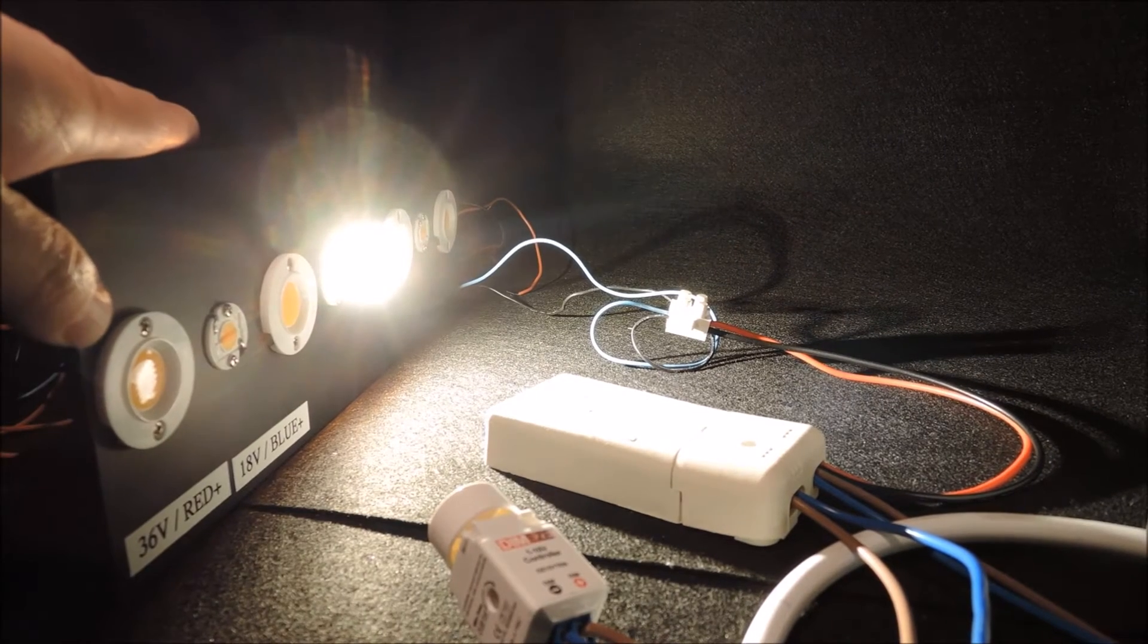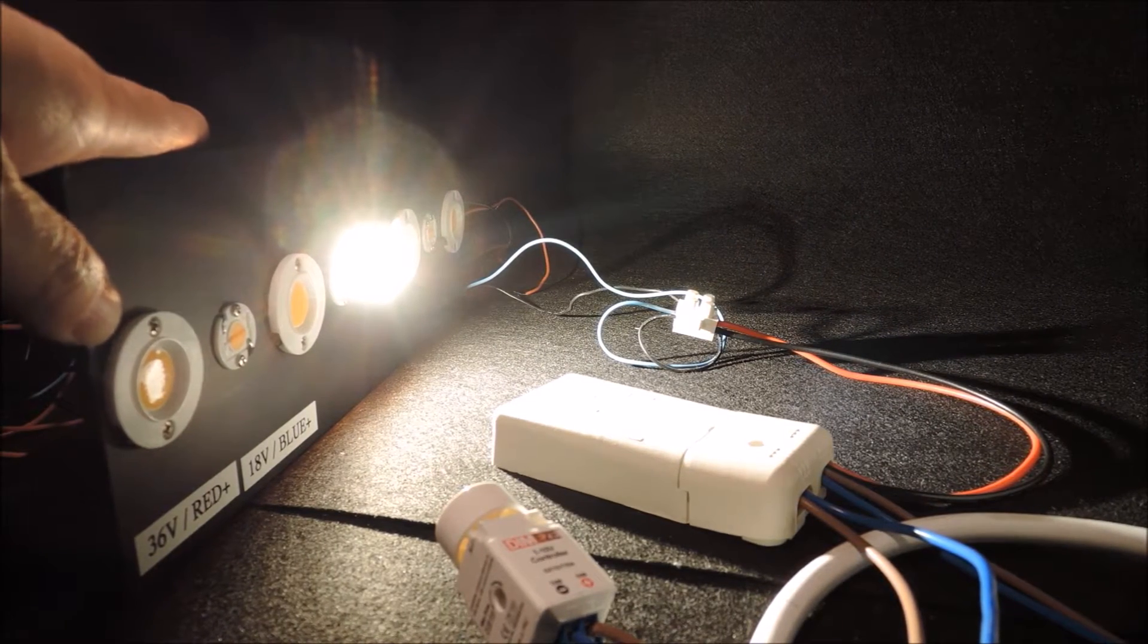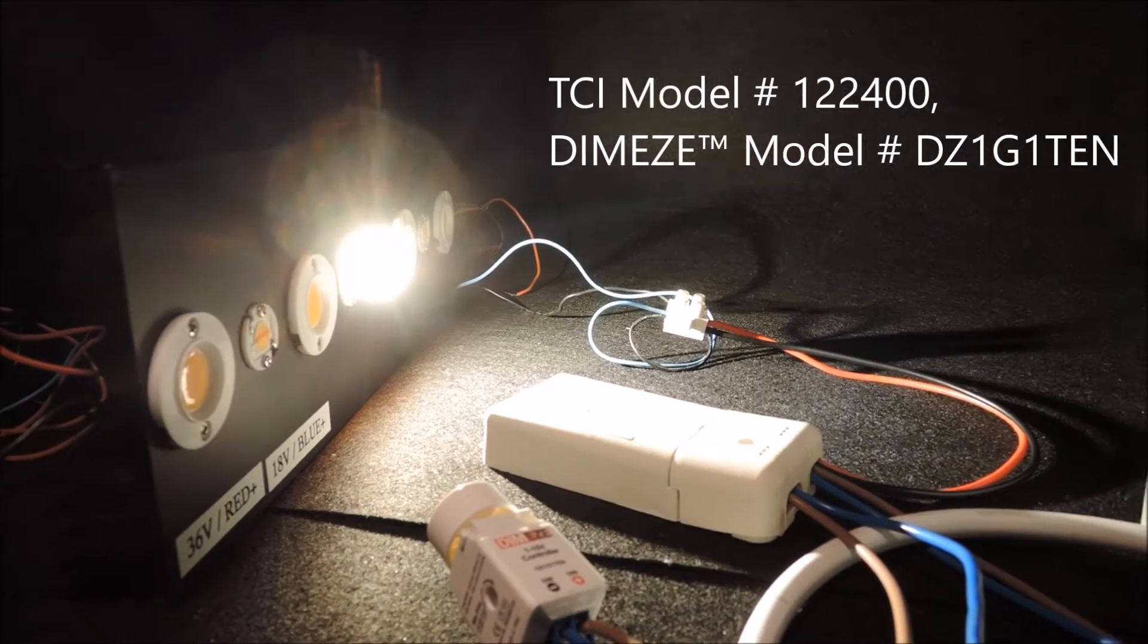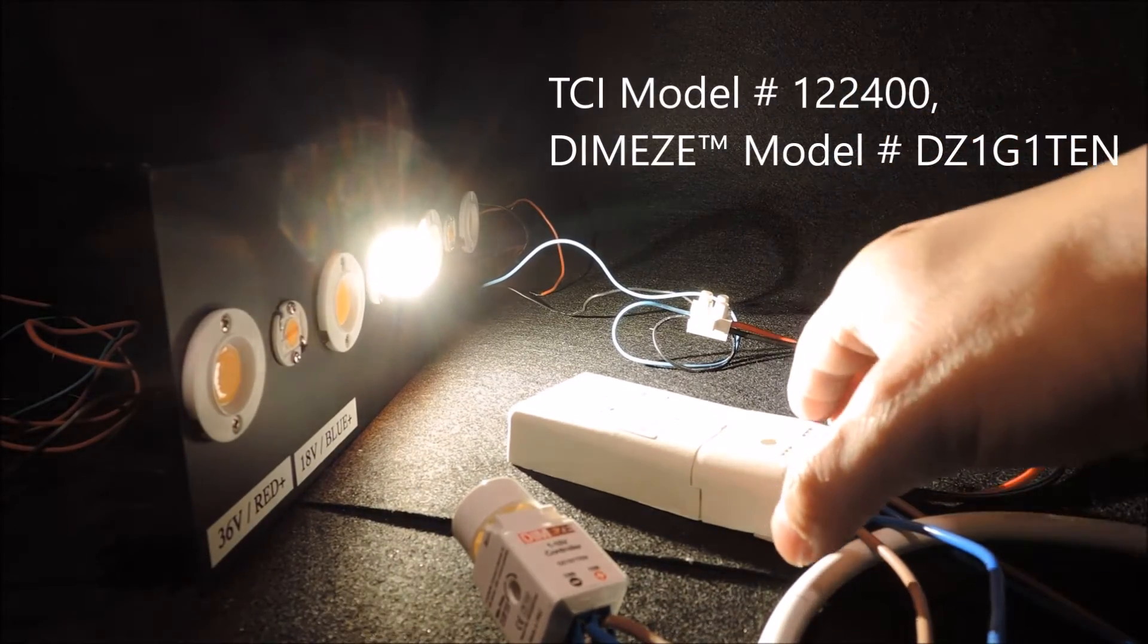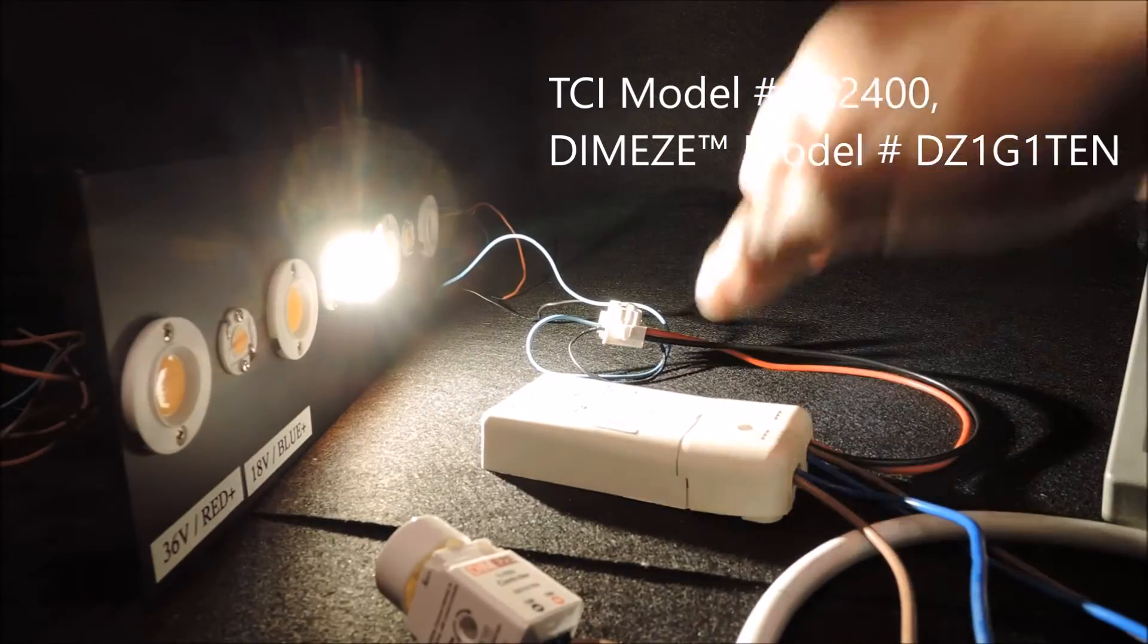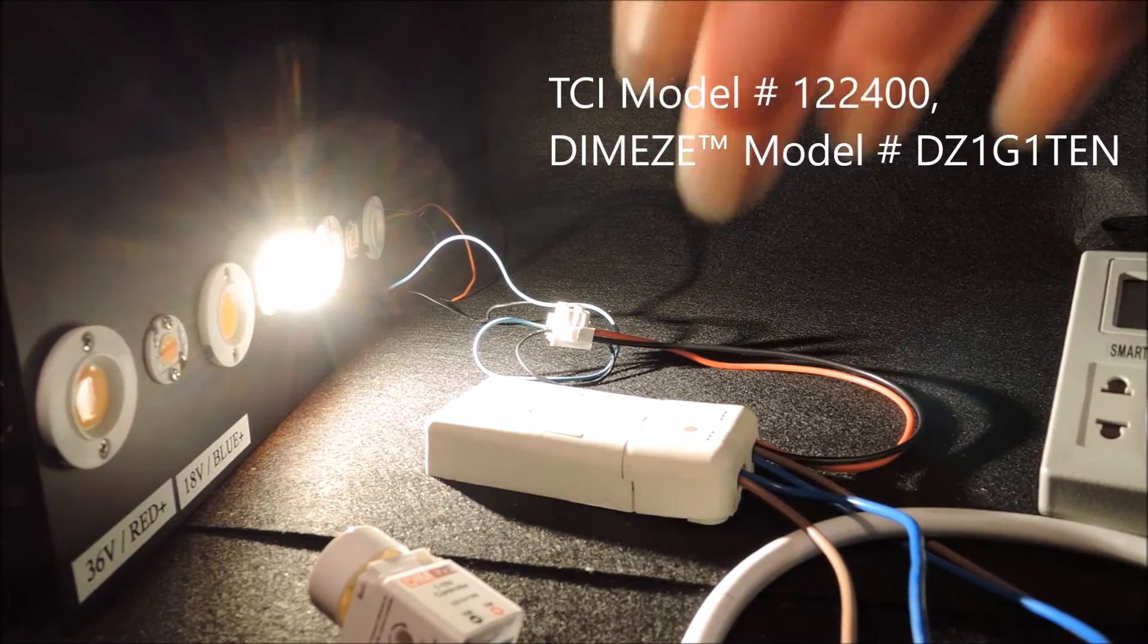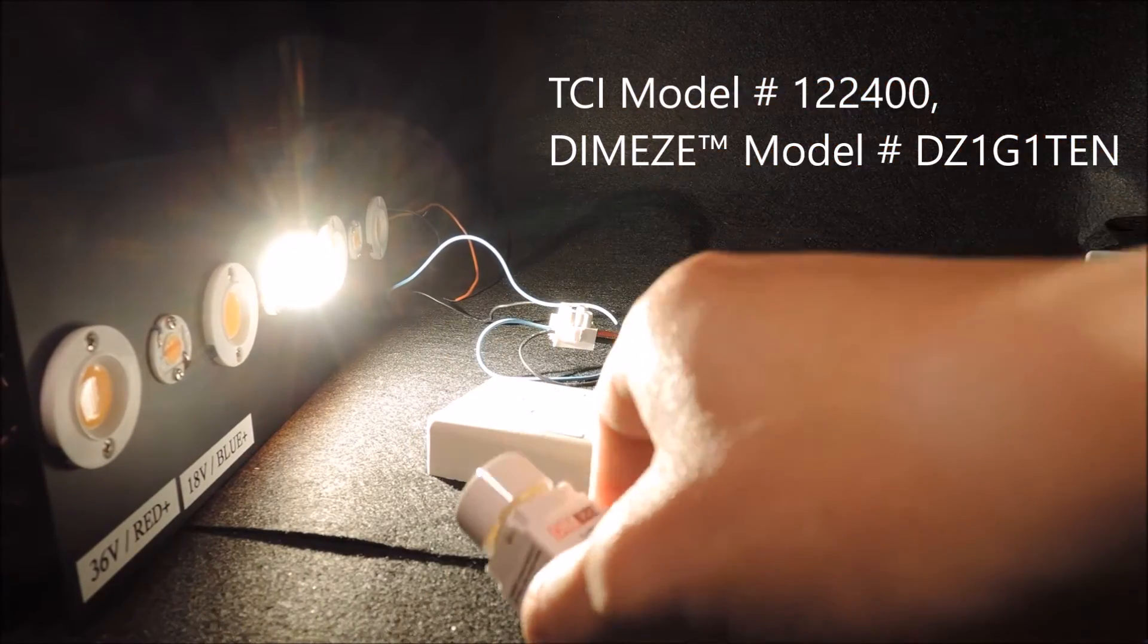Here we have a COB mounted to a heatsink, which serves as a light source for our demonstration. Connected to it is the TCI multi-power 1 to 10 volt dimmable LED driver, model number TCI122400, and we have our 1 to 10 volt controller connected to the driver.